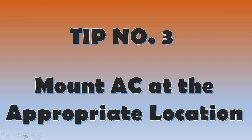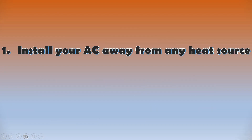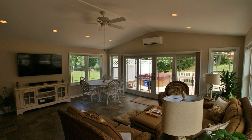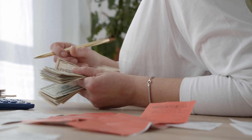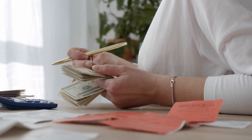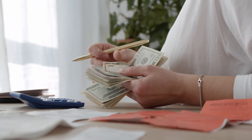Tip number 3 is: Mount AC at the appropriate location. We cannot mount a split air conditioner in any corner of the room — there are specific thumb rules we need to follow, which are directly related to power consumption. First: install your AC away from any heat source. If your air conditioner is installed near any heat source where the temperature is higher than the normal room temperature — like near the kitchen, near an exhaust, or near a window with direct sunlight — your AC sensor won't sense the correct room temperature and the cut-off mode will remain on, giving extra chilling effect which can boost your electricity bill.